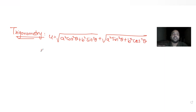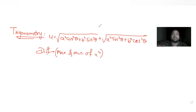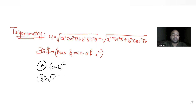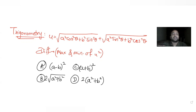Then we have been asked to find the difference between the maximum and minimum value of u square. There are 4 options given to us. The first option is (a minus b) the whole square. Second option is root of 2 times root of (a square plus b square). Third option is (a plus b) the whole square. And the last option is 2 times (a square plus b square).